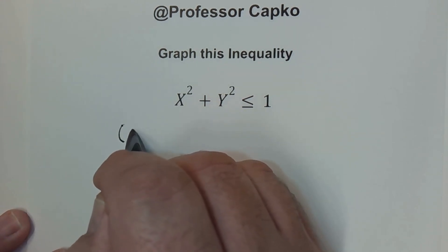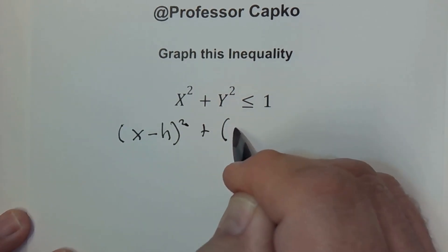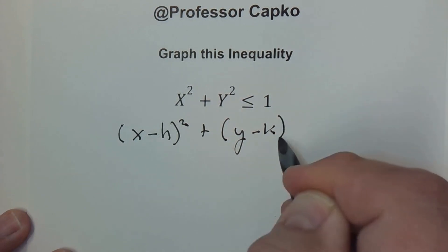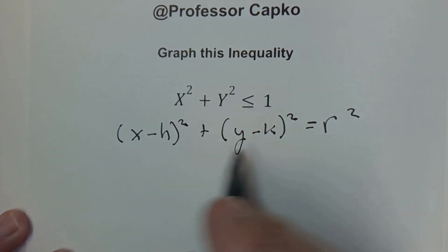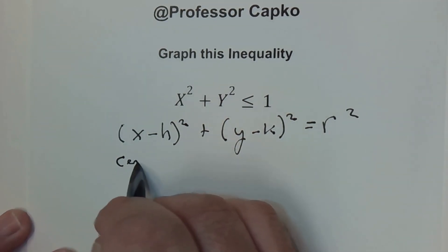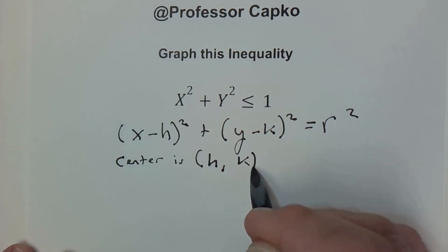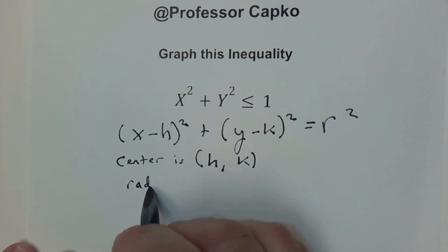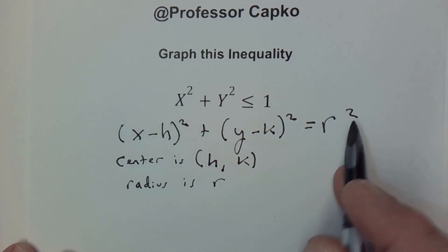We've got (x - h)² + (y - k)² = r². And with this, our center is (h, k) and our radius is r. And in this case, it's squared, so we'd take the square root of whatever this is here.